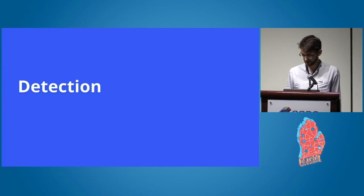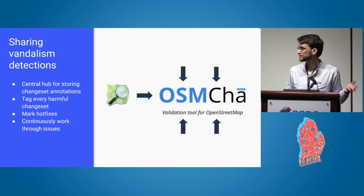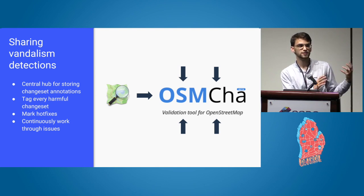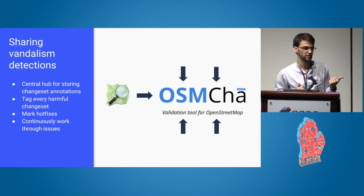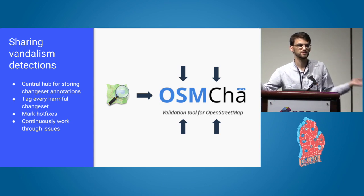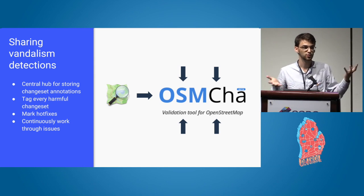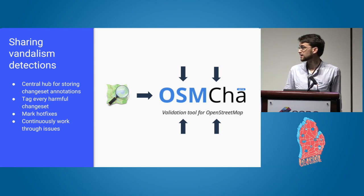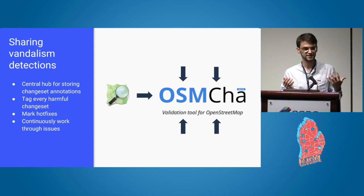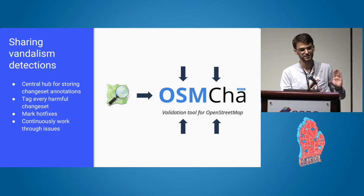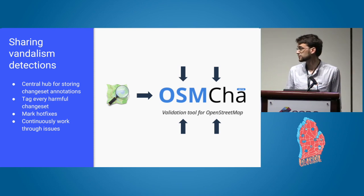On the detection side, we have different companies trying different approaches and we need to innovate. One big thing I see is that we need a central hub to store all those annotations of changesets. If I say a changeset is bad, it doesn't help anyone if only Mapbox knows that. Even if we fix that changeset, someone will have pulled a snapshot from earlier and still got that bad data. Everyone pulls a snapshot that lags a bit behind. If we all store separate annotations as different companies and community, we create process redundancy so that even if something slips at one place, it doesn't at another.